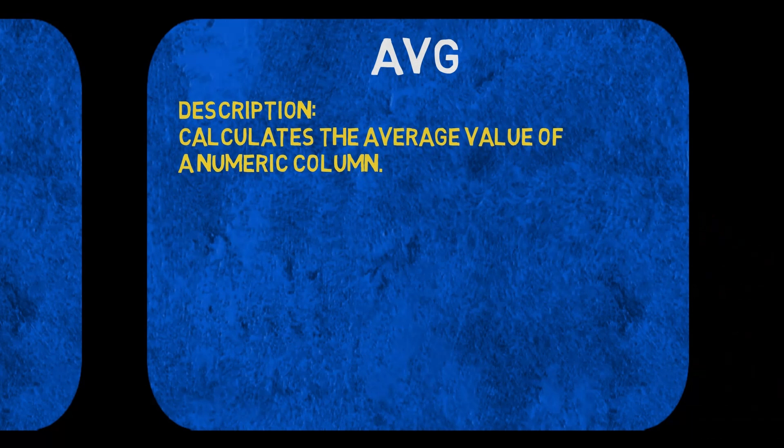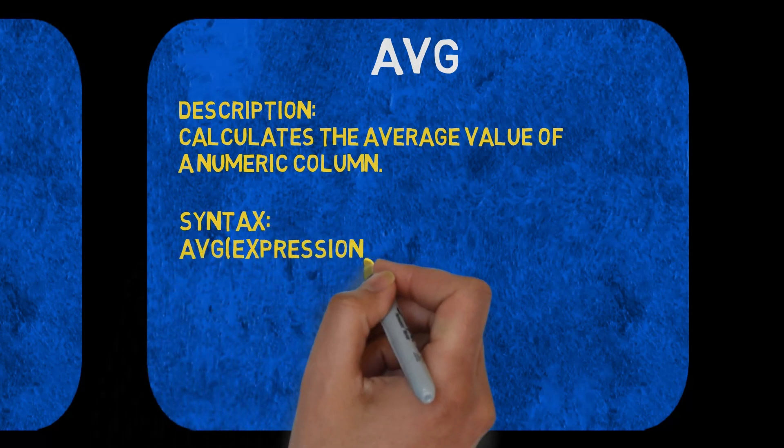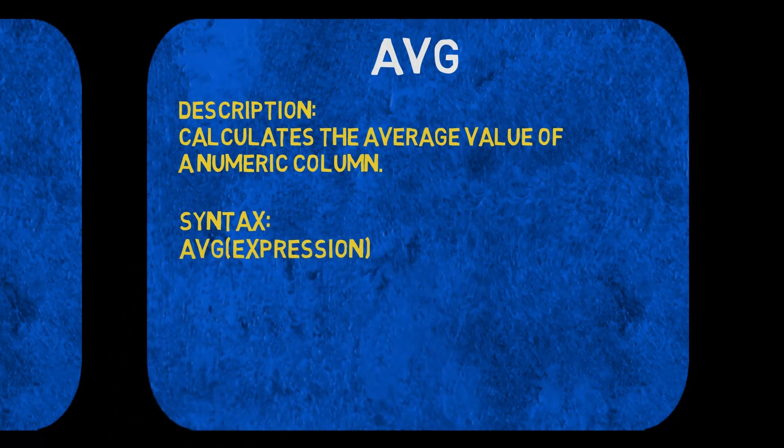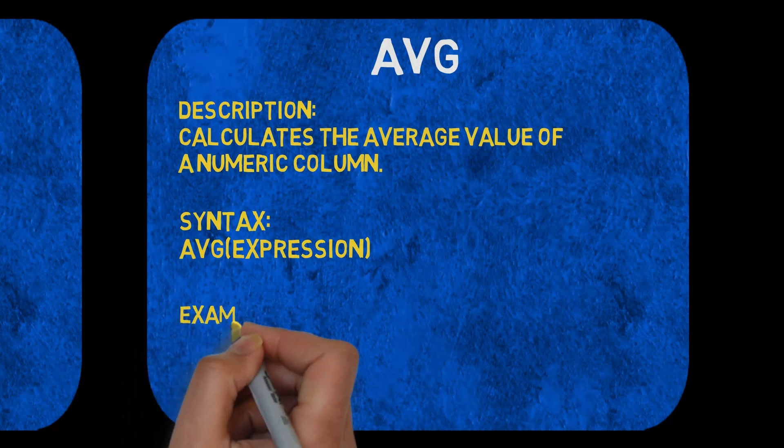Average description: calculates the average value of a numeric column. Syntax and example.